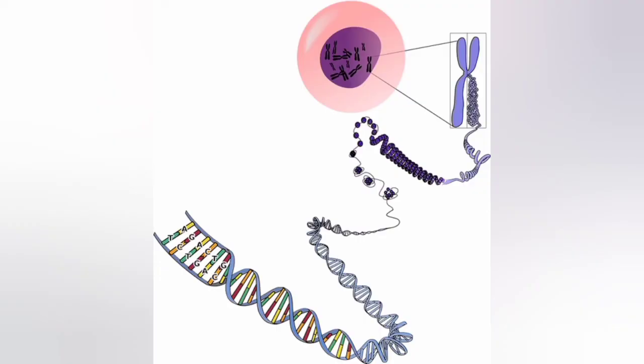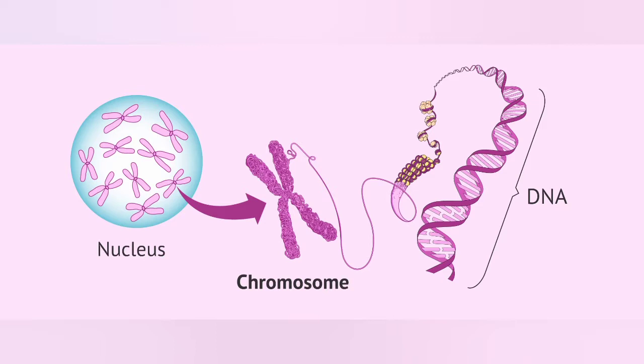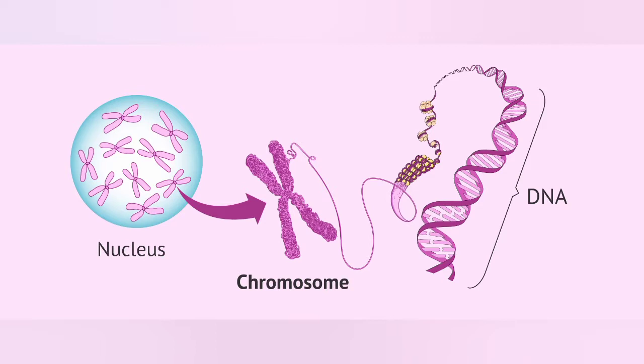The chromosome is considered as the physical basis of heredity because chromosomes have special organization, individuality, function, and are capable of self-reproduction. The major constituent of chromosome is DNA, which is the universally accepted genetic material.